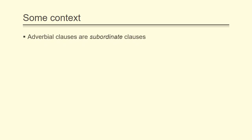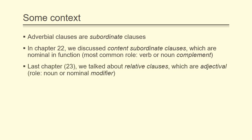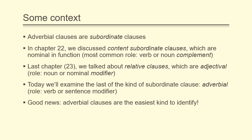Let's get some context on adverbial clauses. First of all, they are subordinate clauses. In Chapter 22, we discussed content subordinate clauses, which are nominal in function, and their most common role is to be a verb or noun complement. Last chapter, we talked about relative clauses, which are adjectival, and their role is to be a noun or nominal modifier. In today's chapter, we'll talk about the last kind of subordinate clause, which is the adverbial subordinate clause, and its role is to be a verb or sentence modifier. And some good news here: adverbial clauses are going to be the easiest kind to identify.